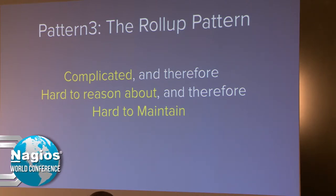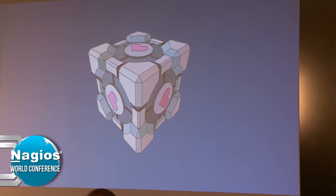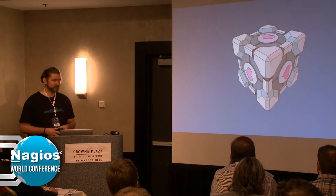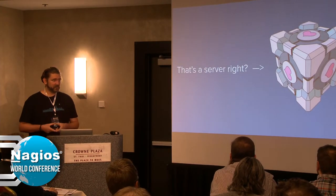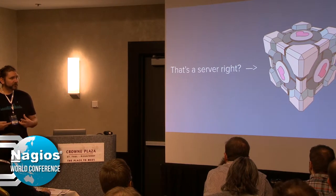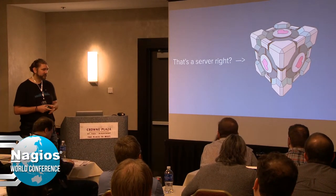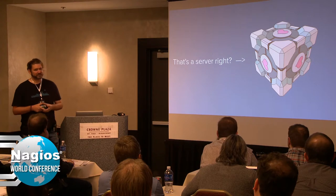So, before we talk about the fourth pattern, I need to talk a little bit about an assumption we're making about this thing that we care about — a fundamental assumption that I think has been shaping our understanding of what monitoring tools look like for years. Namely, this assumption is that the thing we care about is a server. And I think when we're building scalable metrics processing systems, this is an assumption that hurts us. It's increasingly important to understand that this isn't necessarily the case anymore.